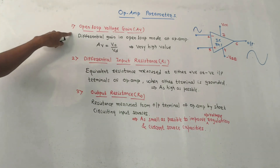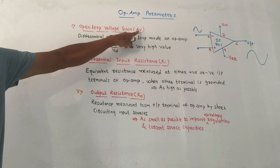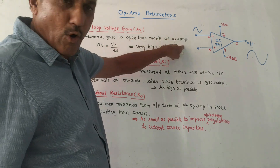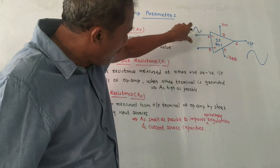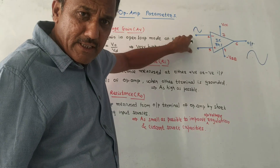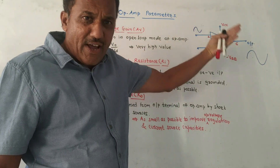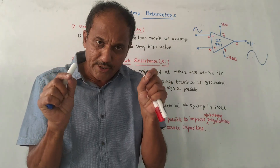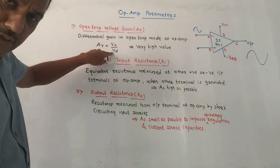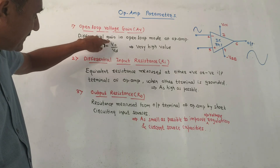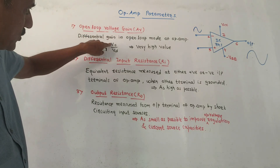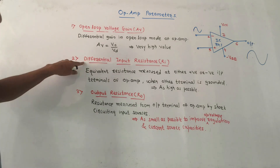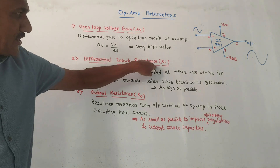The first important parameter is open loop voltage gain, notation AV. It is the differential gain in open loop mode. Differential gain means if we apply input to both terminals, the op-amp amplifies the difference signal. The basic definition of gain is output upon input: output is V0, input is the difference voltage VD. So AV equals V0 upon VD, and ideally this value should be very large.